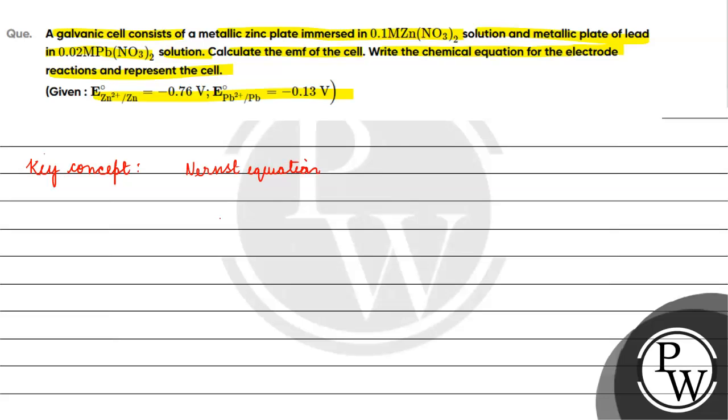The Nernst equation is basically E cell equals E naught cell minus 0.0591 by n log with the base 10 concentration of the products by the concentration of the reactants.